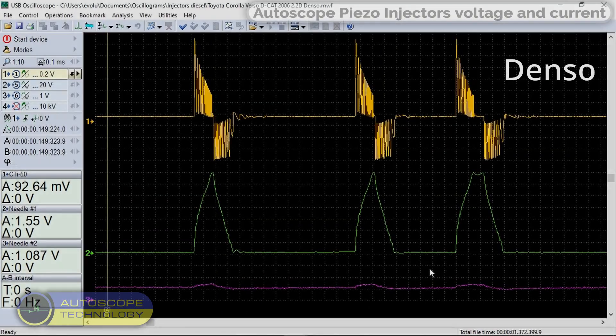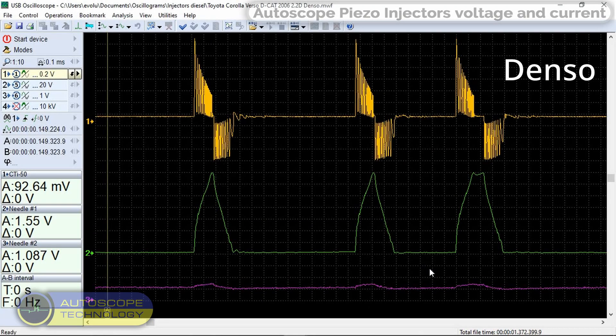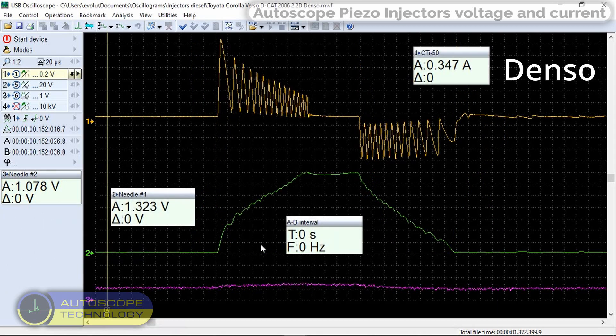Here's an example of signals recorded on a Toyota Corolla Verso DCAT. Here are installed Denso diesel injectors.